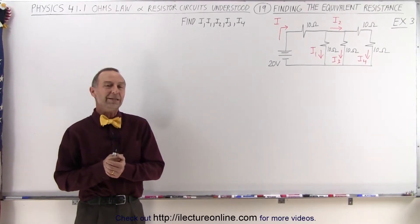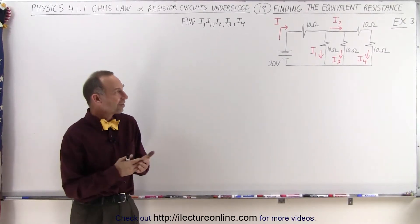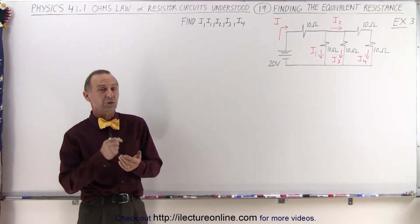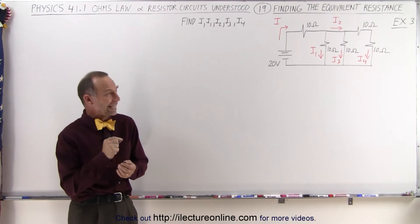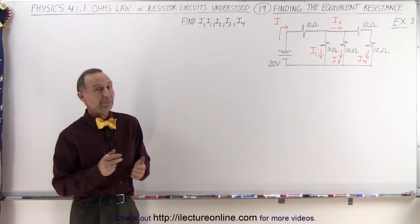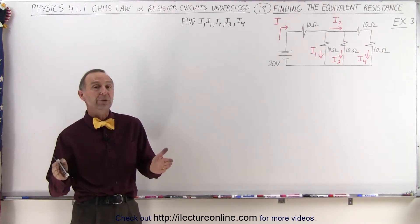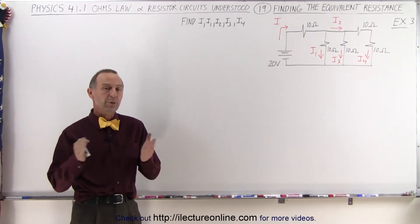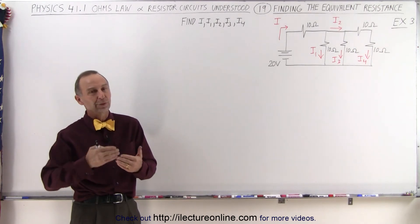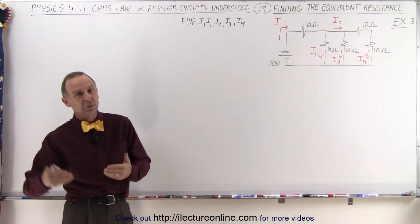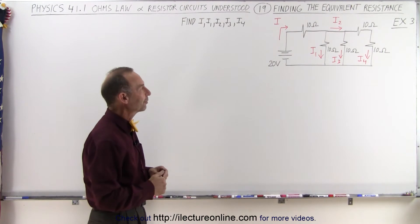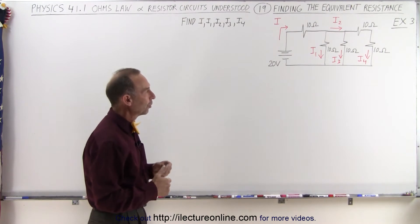Welcome to ElectronLine. In this example, what we're trying to find is the current in each of the branches. That means we first need to find the equivalent resistance, find the total current, and then use our techniques to find the current in each individual branch.